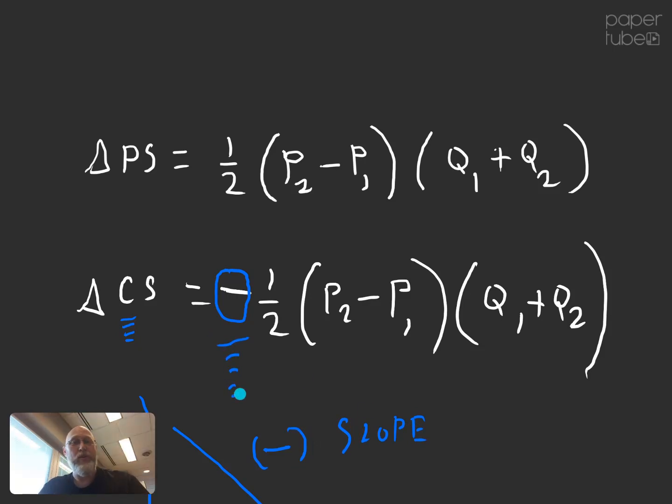So that was a little diversion back to the producer surplus. Let me take a look at the numbers we had on the other page. P1 was 3 and P2 was 10. So the change in producer surplus is going to be one half of P2, which was 10, minus P1, which was 3, multiplied by the sum of the two quantities. So Q1 was 10 and Q2 was 30.